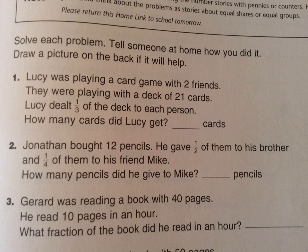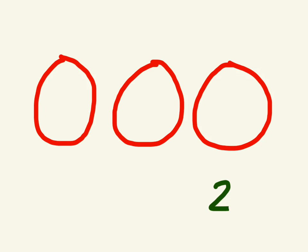Let's make a quick picture to figure this out. I'm going to make a circle for each person — three people — and we've got twenty-one cards to pass out. Keep doing that until you get to twenty-one and see how many cards each person receives. Or you can use multiplication or division to help you, if you know that already. Just write the number model beside the answer if you do that.